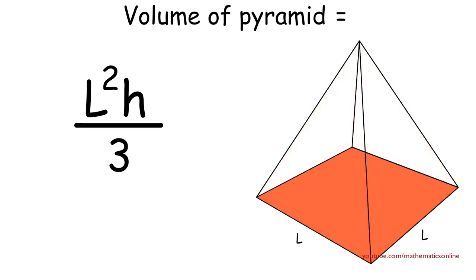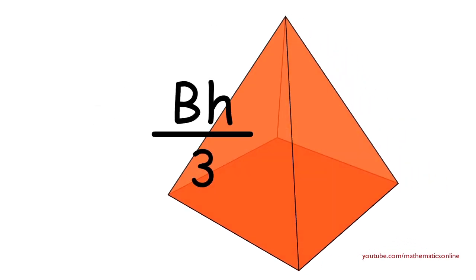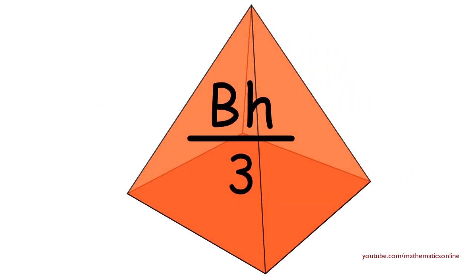Now l² represents the area of the base of the pyramid. Therefore we replace l² with B, the area of the base. And finally we have one-third times the area of the base times the height, which gives us the volume of a square pyramid.